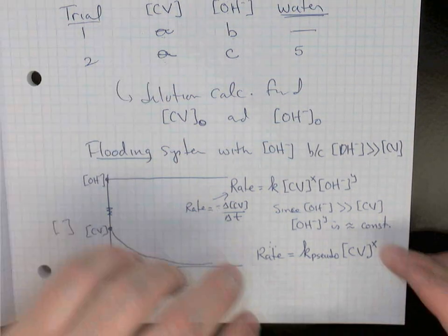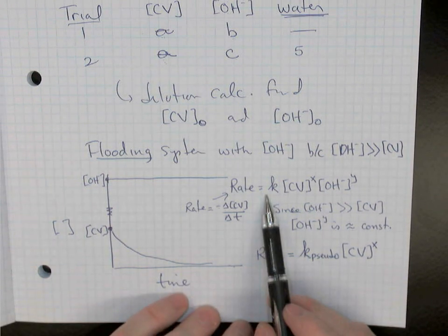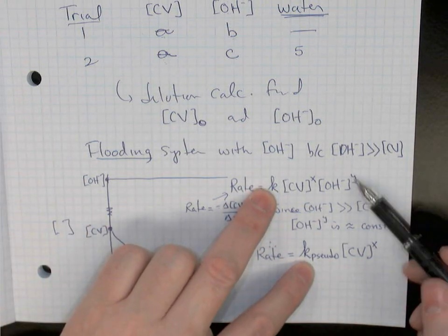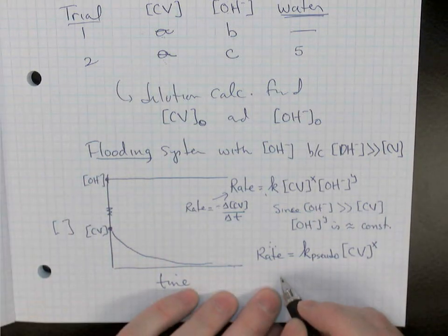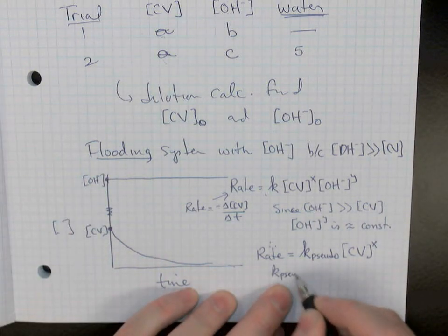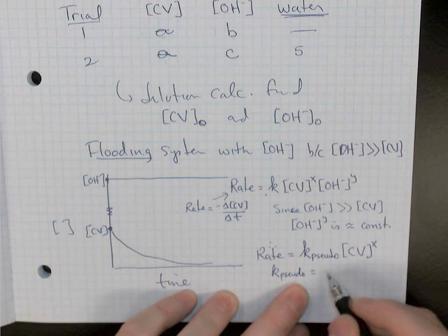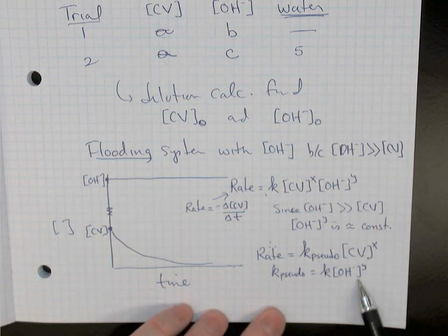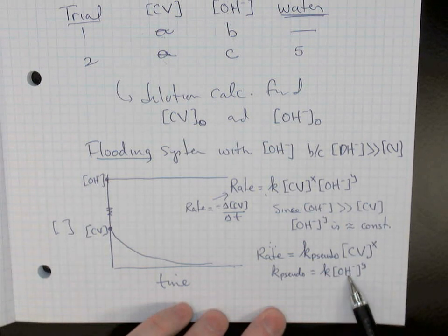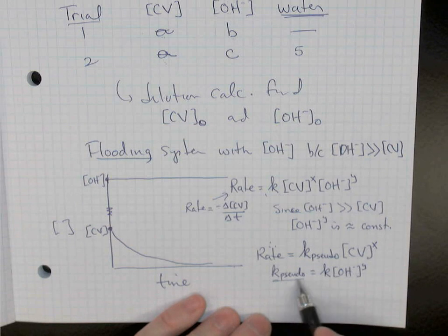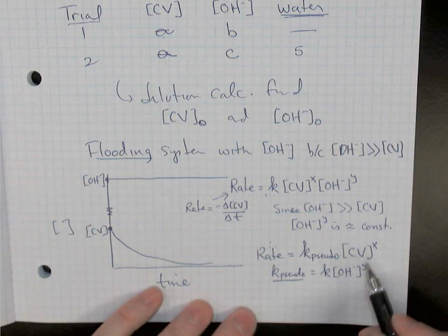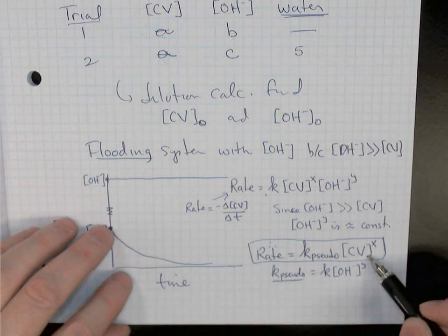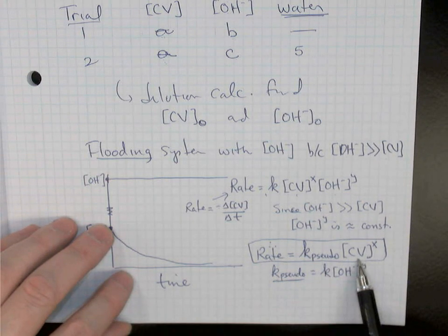The pseudo rate constant k_pseudo, meaning the 'false' rate constant, equals the actual rate constant k times [OH⁻]ʸ. Because hydroxide is constant, k × [OH⁻]ʸ is also constant and we combine them into k_pseudo. This reduces the rate law from two concentrations down to one — only crystal violet's concentration — which allows us to apply integrated rate laws.